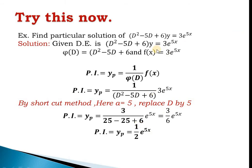Example 2: phi(D) = D² − 5D + 6 and f(x) = 3e^(5x). PI = 1/(D² − 5D + 6) · 3e^(5x). Taking 3 outside and replacing D by a = 5: 5² − 5(5) + 6 = 25 − 25 + 6 = 6. So PI = 3/6 · e^(5x) = (1/2)e^(5x).